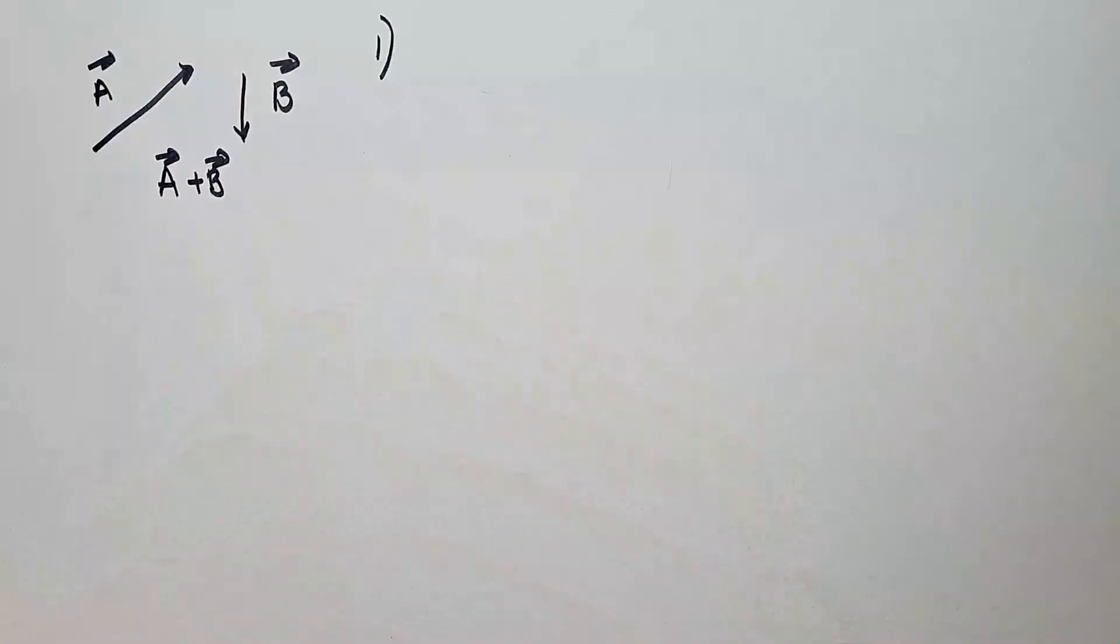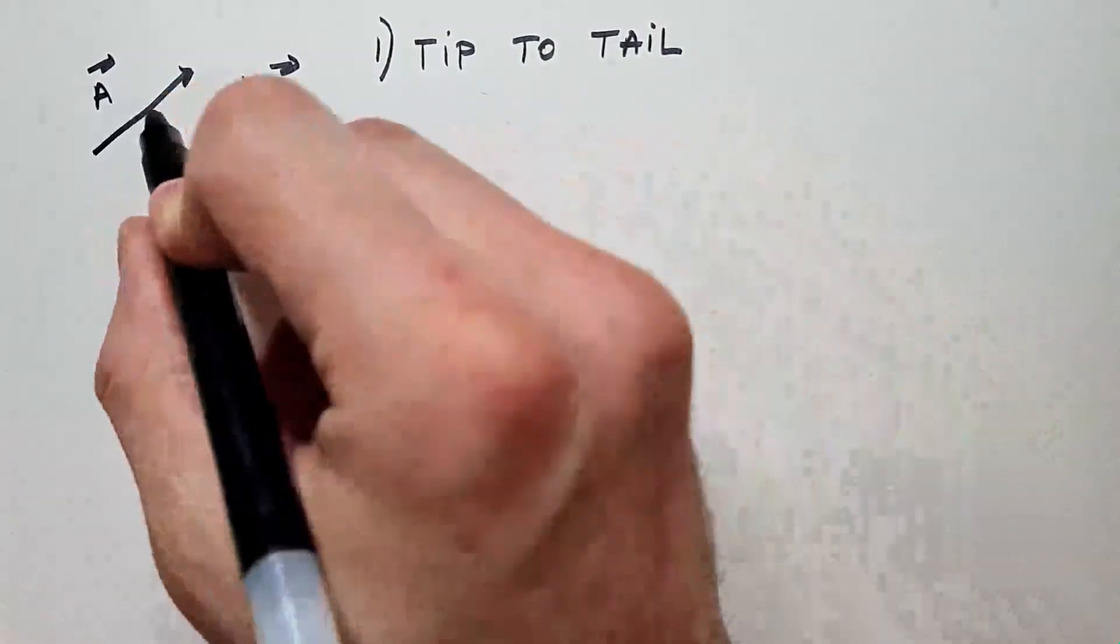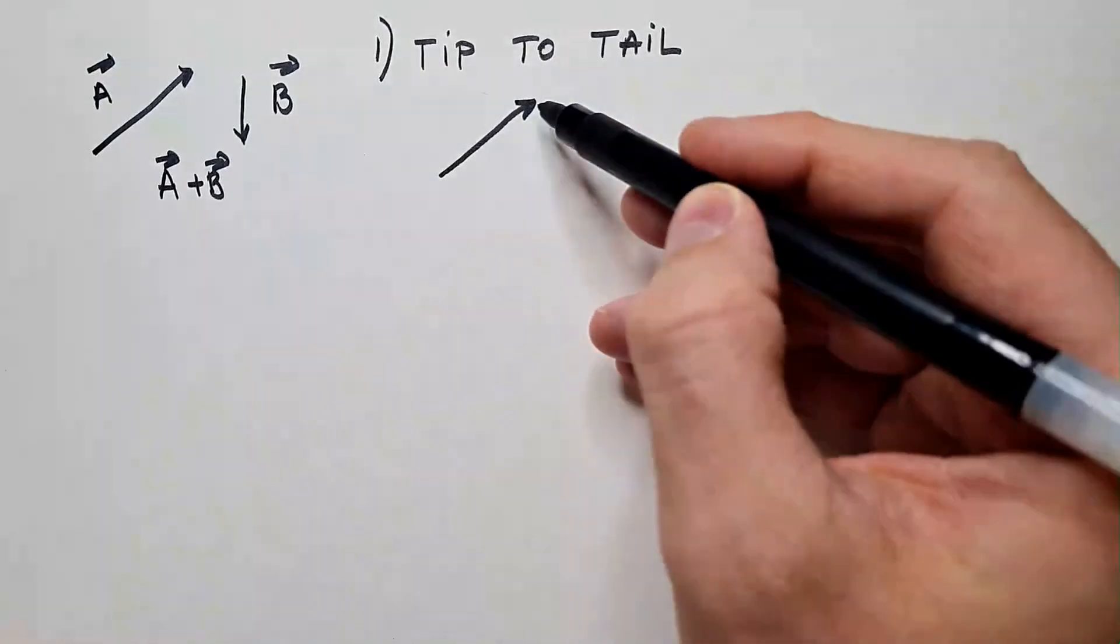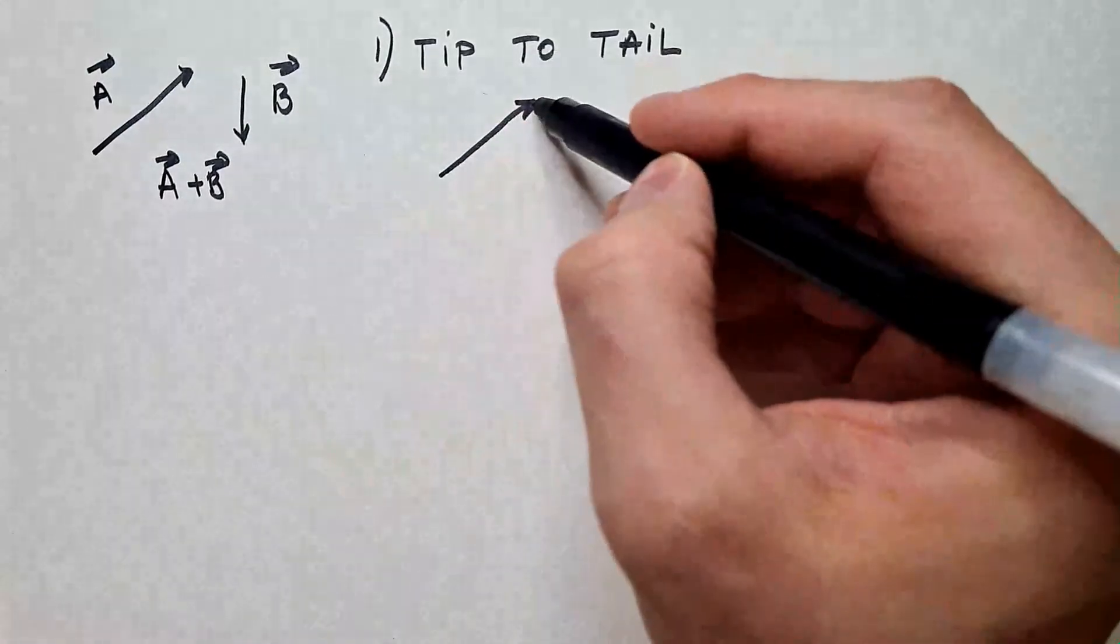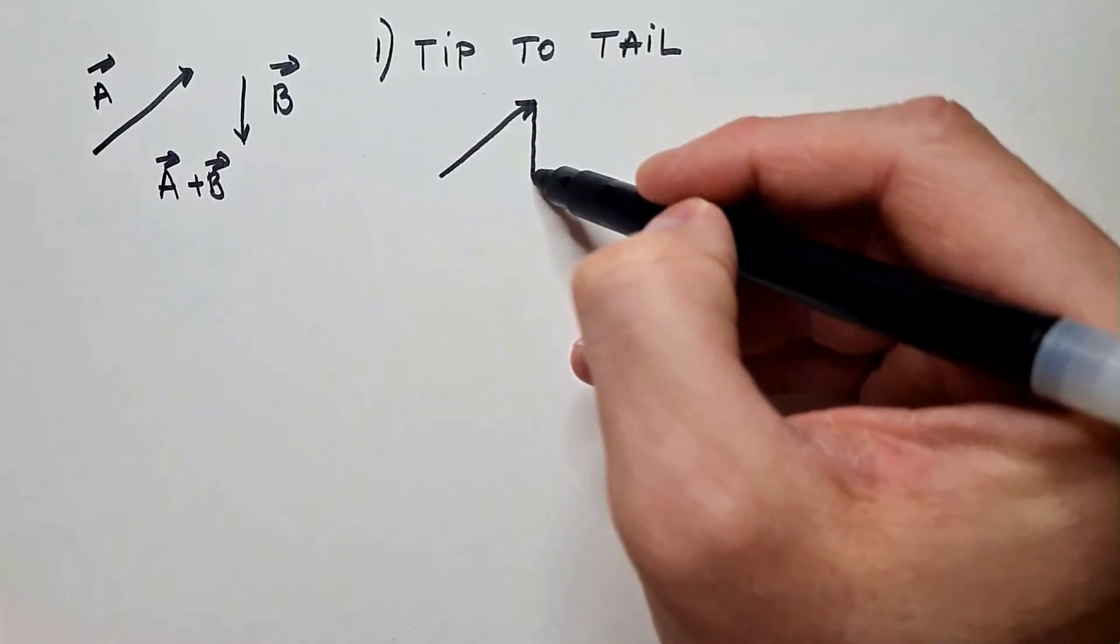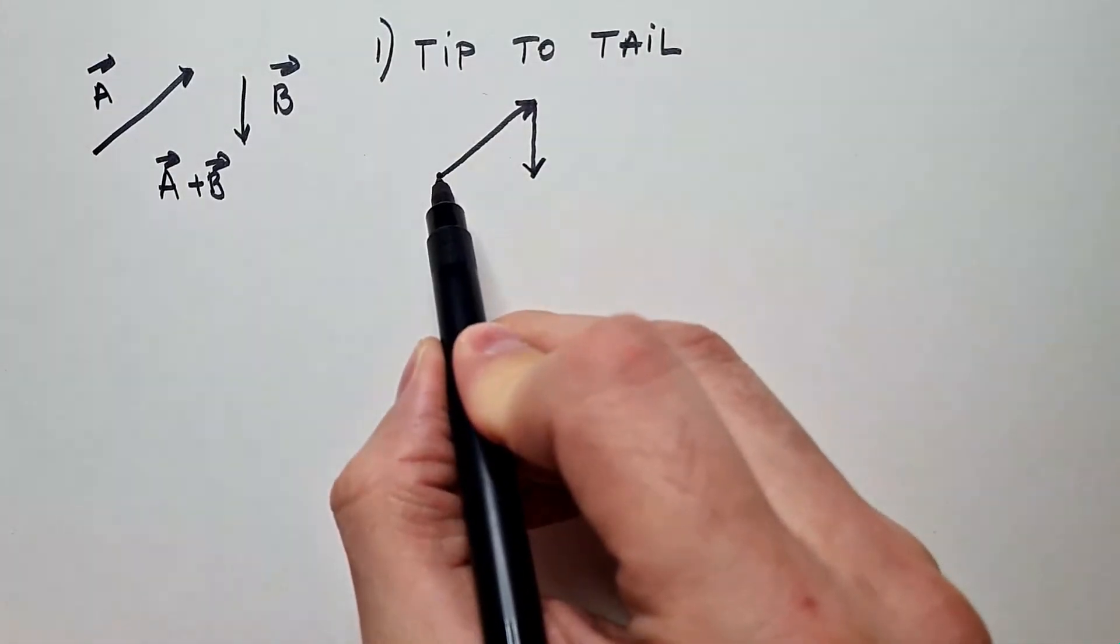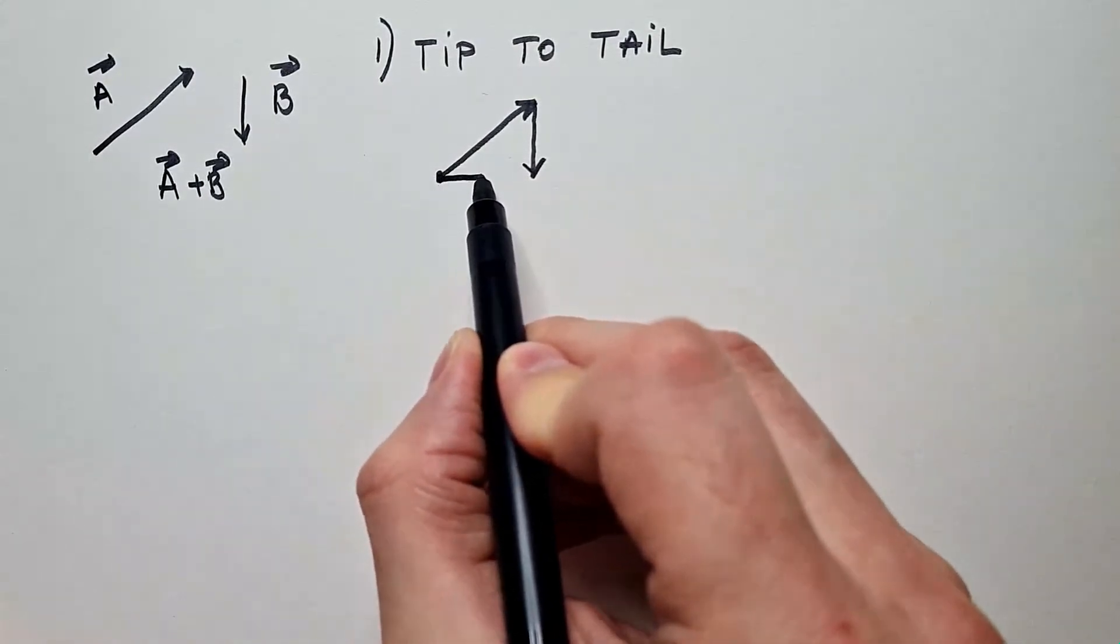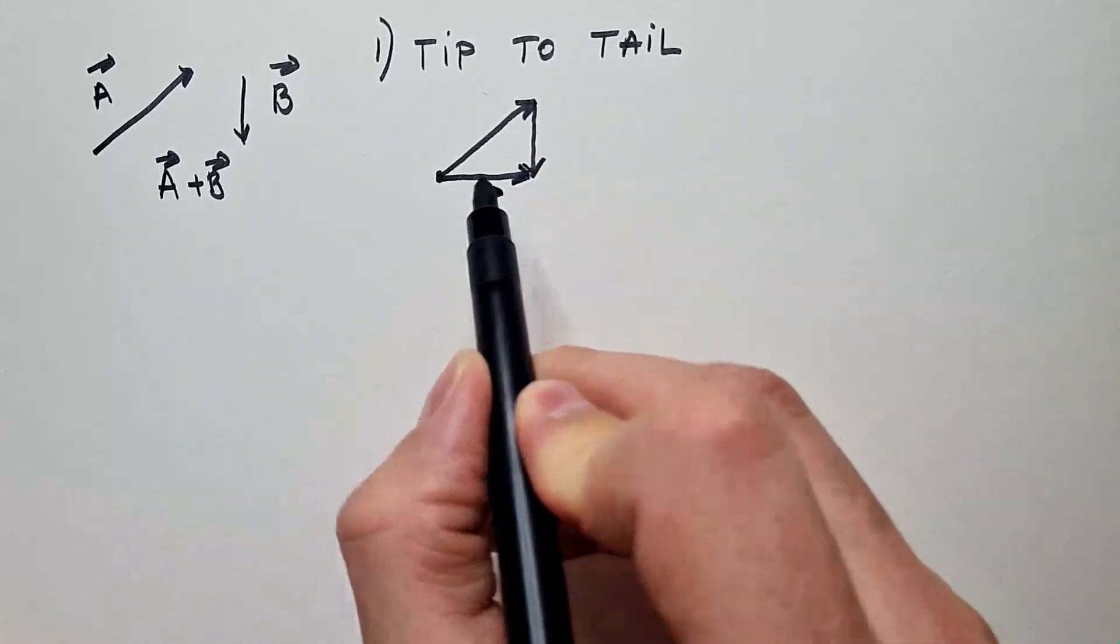There are three methods to sum vectors. Method number one is called tip to tail, and it says you take vector A and to the tip of this vector put tail of vector B. Connect tail of A to the tip of B, and this is resulting vector C.